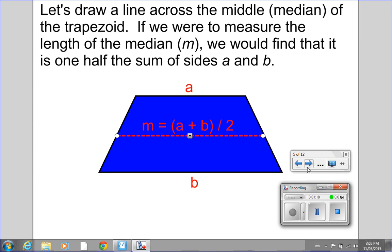Now let's draw a line across the middle, or the median, of the trapezoid. If we were to measure the length of the median using a ruler, we would find that it is one-half the sum of sides A and B. So in other words, if we measured side A, measured side B, added them, and then divided by two, we would get the same length as this dotted line.